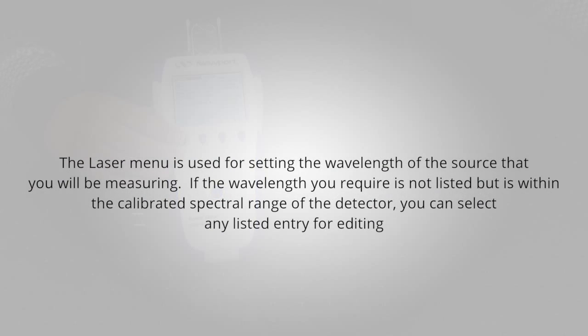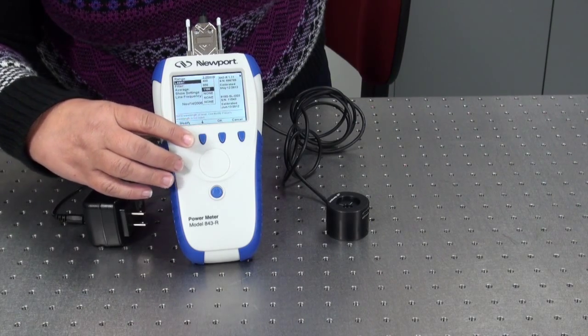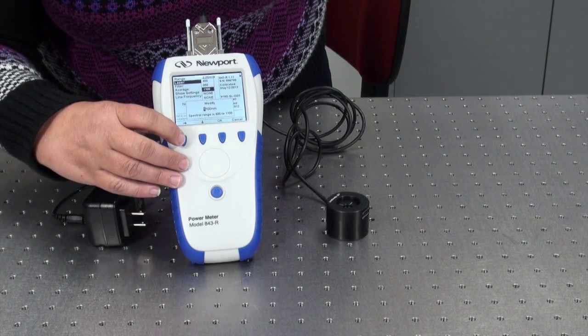The laser menu is used for setting the wavelength of the source that you will be measuring. If the wavelength you require is not listed but is within the calibrated spectral range of the detector, you can select any listed entry for editing by using the down arrow soft key and then the modify soft key.